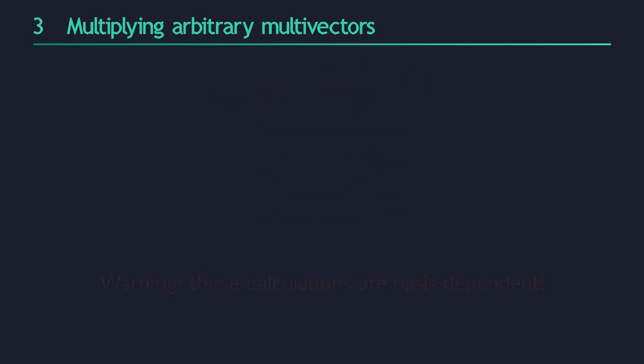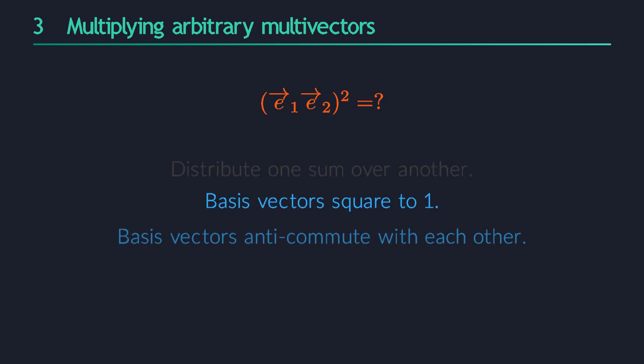Here is one final example. I won't give you the answer, you should really try this one yourself. I promise you that the result will be a big surprise. Calculate the square of the basis bivector. You don't even need to distribute anything in this case. Just apply the two other rules and see what happens. We will dive into this surprising and hopefully familiar result in the next video.